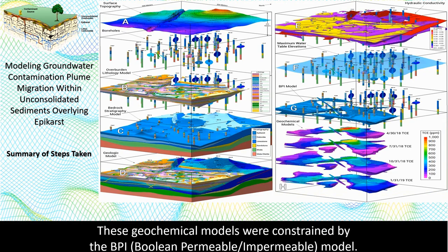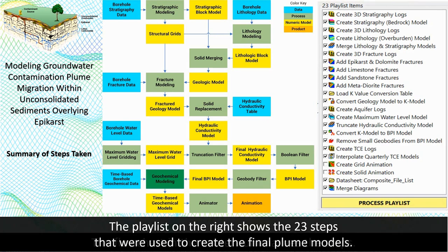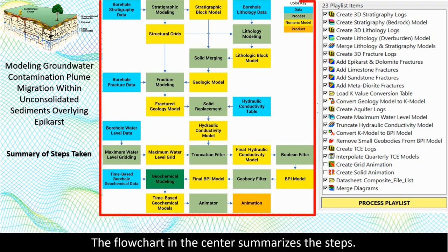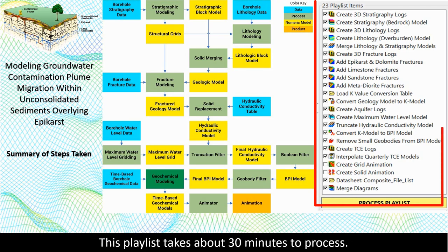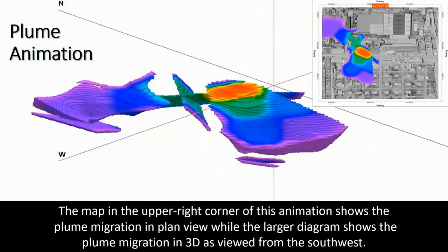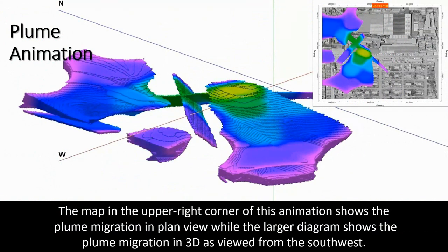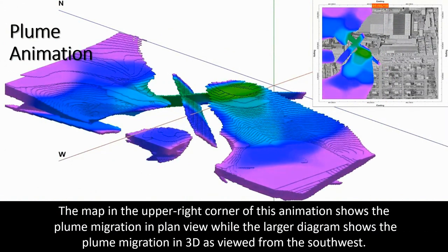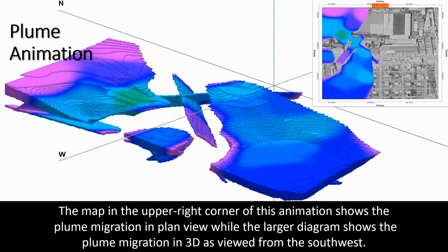The playlist on the right shows the 23 steps that were used to create the final plume models. The flowchart in the center summarizes the steps. This playlist takes about 30 minutes to process. The map in the upper right corner of this animation shows the plume migration in plan view, while the larger diagram shows the plume migration in 3D as viewed from the southwest.